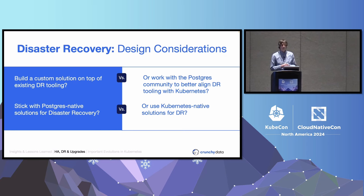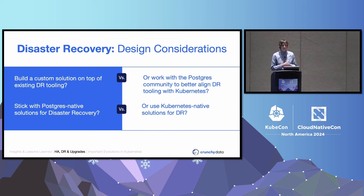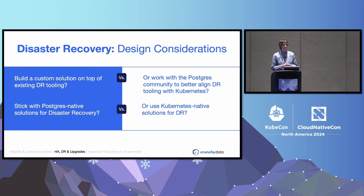This left us with an important decision: use a tried-and-true disaster recovery solution within the Postgres ecosystem, or build a solution around Kubernetes-native capabilities such as volume snapshots. We didn't want our decision to blind us from embracing solutions from the Kubernetes community. If we adopted a Kubernetes solution, we needed to use it in a way that recognized the specific needs of Postgres. And rather than building custom layers on top of existing solutions, it would be even better to work with the maintainers of those solutions to build in the missing features.